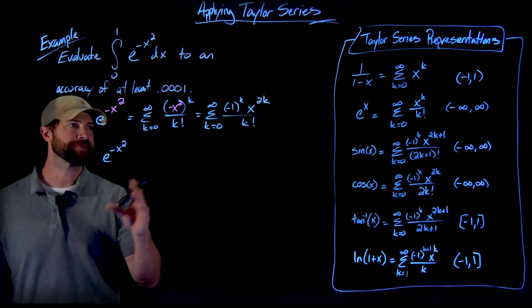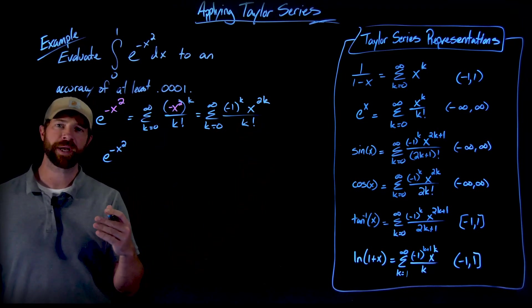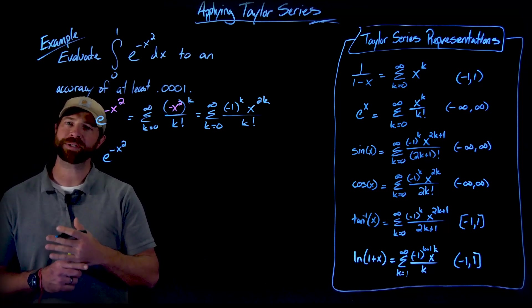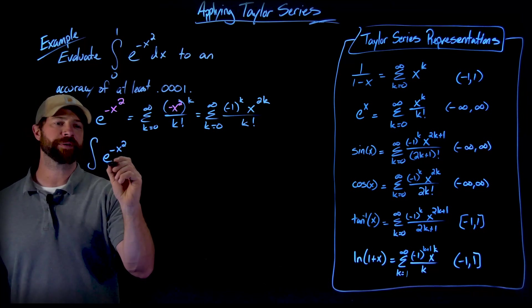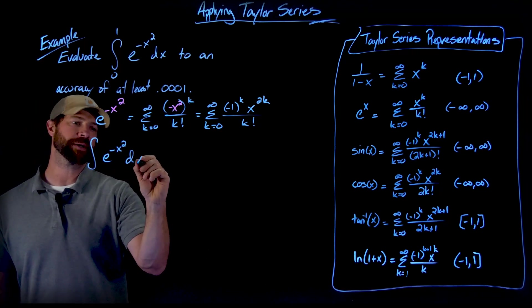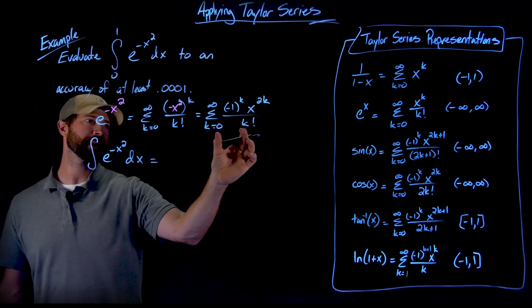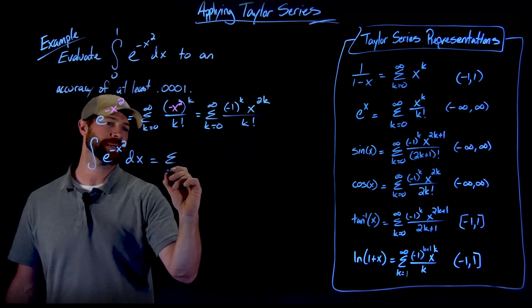So now that I have this Taylor series representation of e to the negative x squared, I also remember that I'm allowed to integrate term by term. So the integral of e to the negative x squared is the same as the term by term integration of this statement right here.